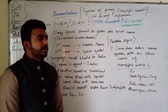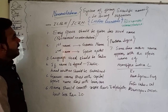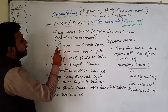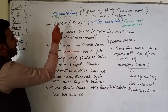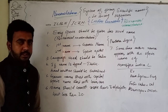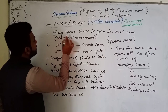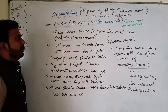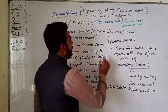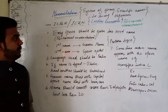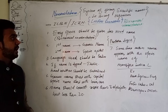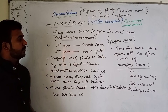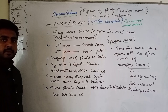According to binomial nomenclature, every species should be given a two-word name — that's why it is known as binomial nomenclature. Each species name consists of two words; for example, Panthera tigris is the zoological name of the tiger, and it consists of two words.